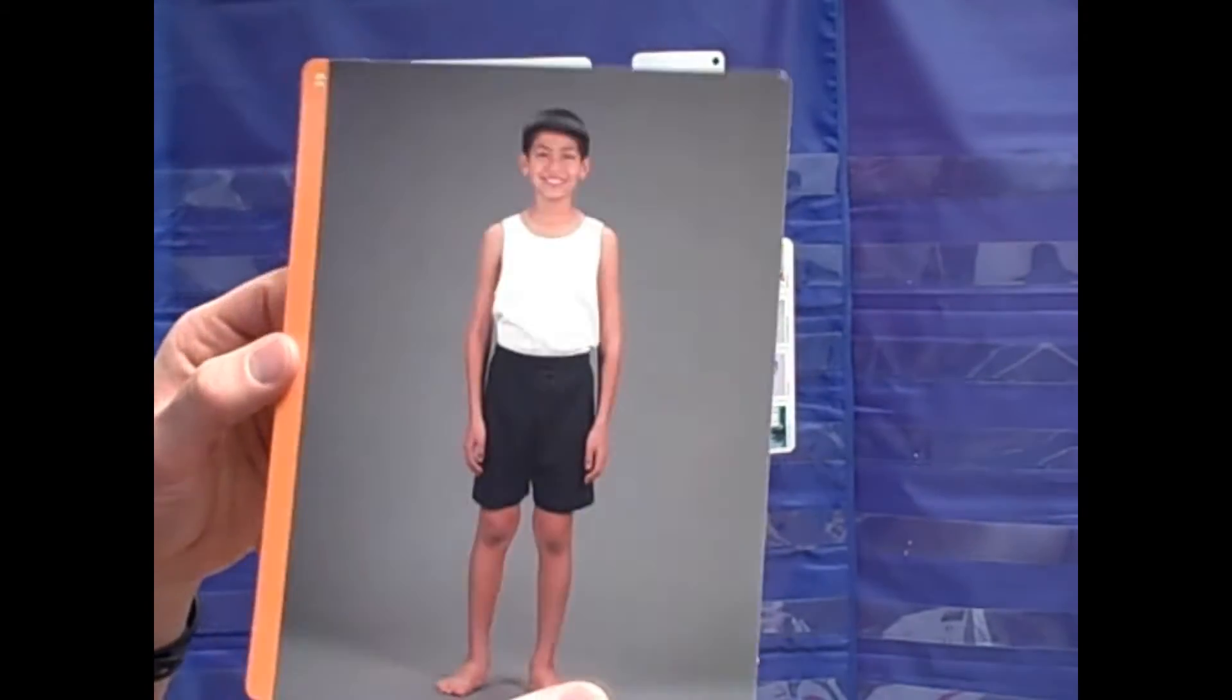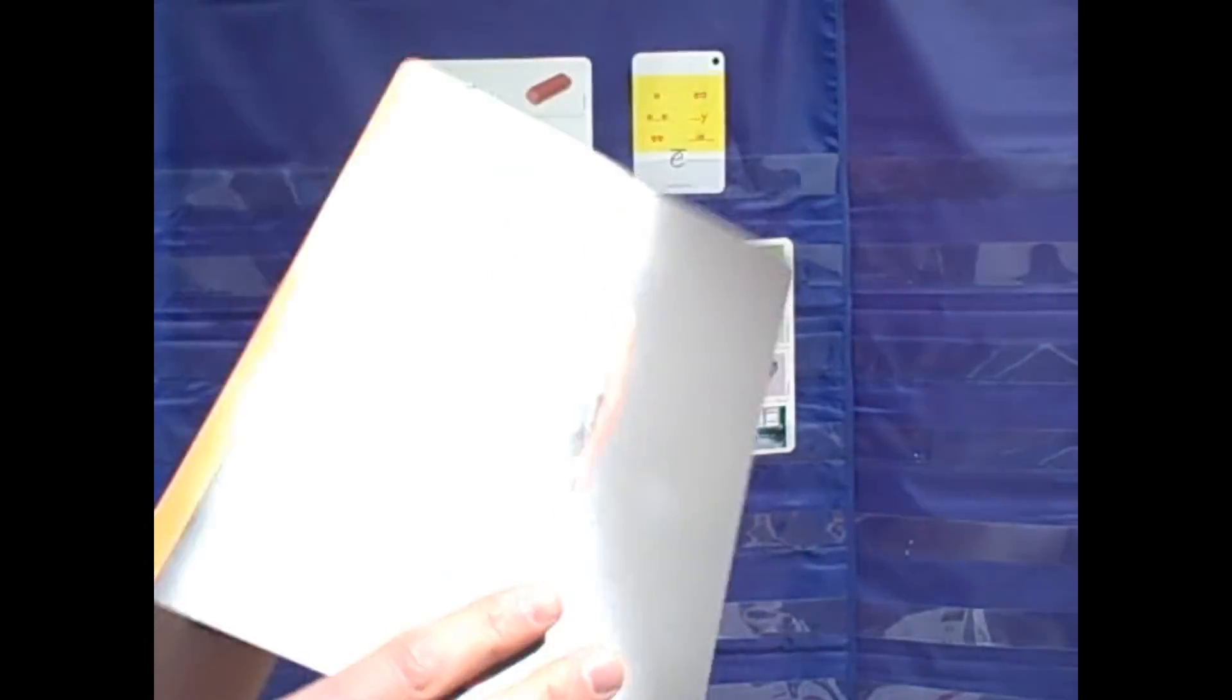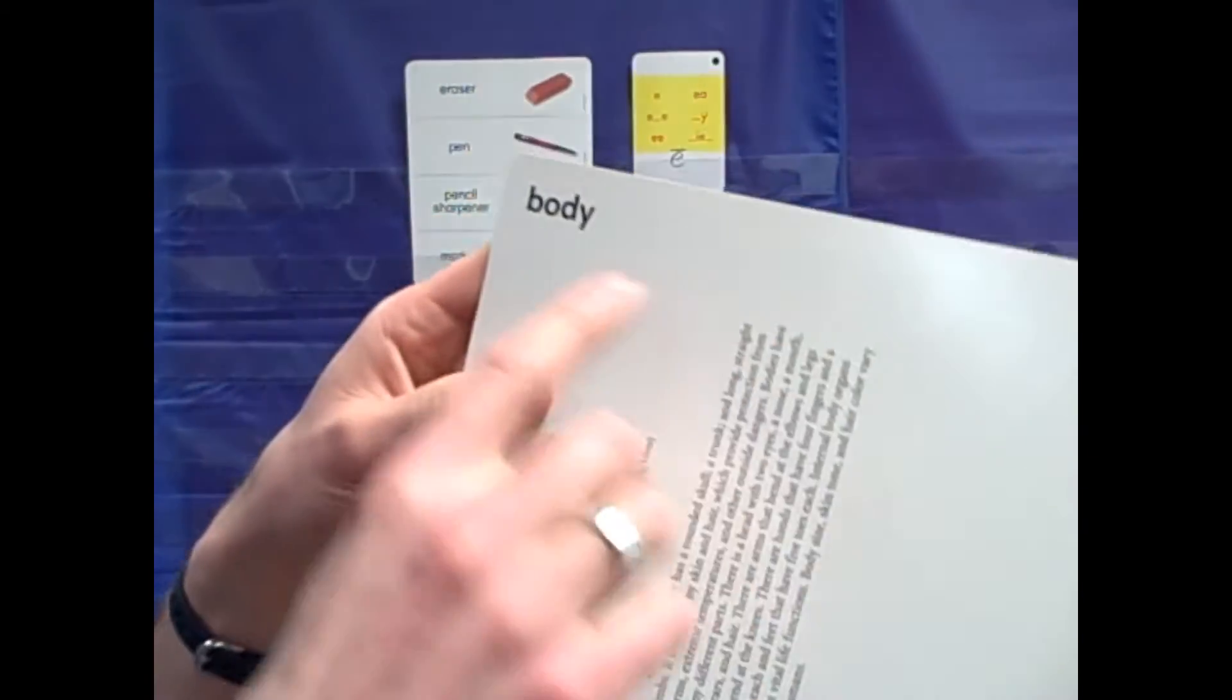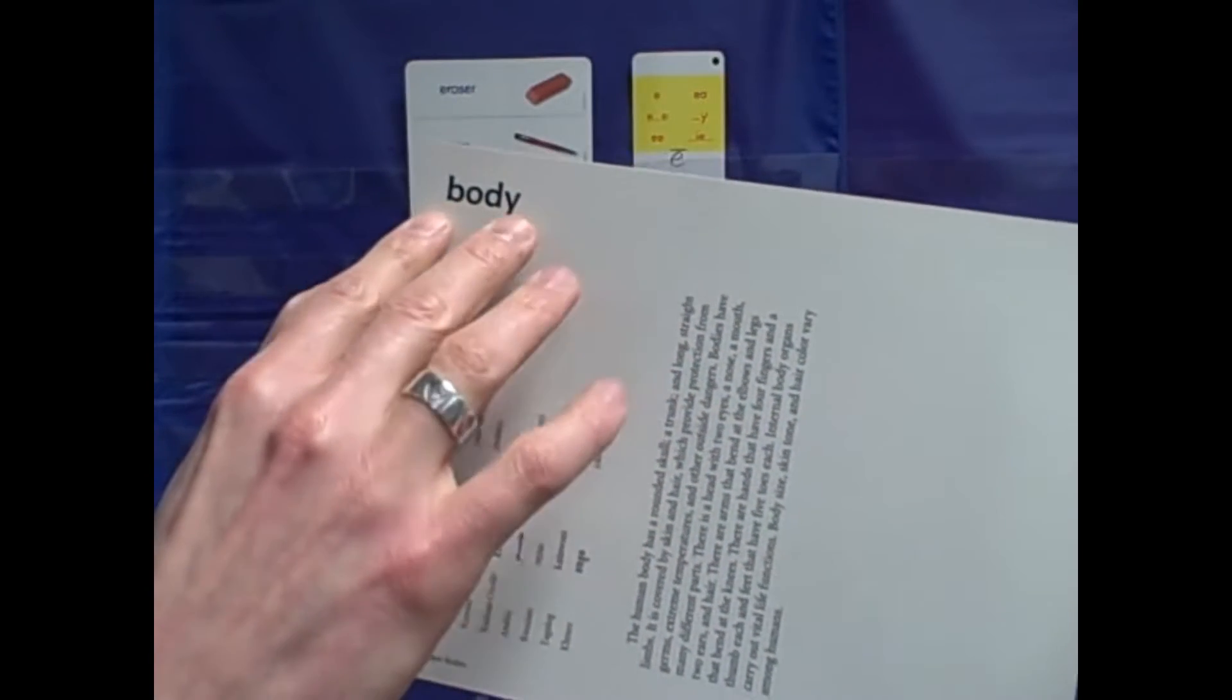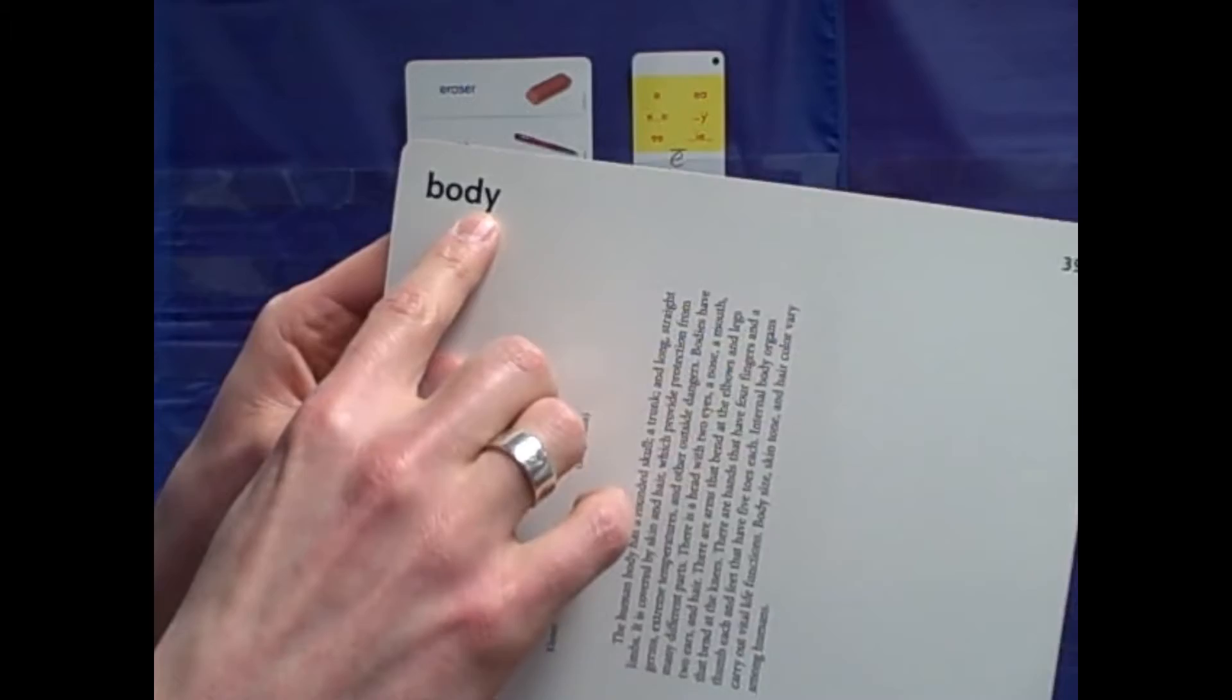I like this picture because it shows body. At the end of body is a Y. It's one of the spellings for long E. At the end of the longer word, Y says E.